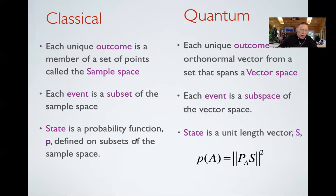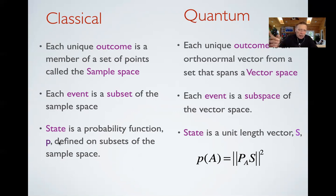In classical probability theory, when we want to assign a probability to an event — say, the probability that somebody gives a rating greater than four — we construct a probability function P that assigns a probability to all these events. This probability function is a number greater than or equal to zero and less than or equal to one. When we have two mutually exclusive events A and B, the probability of A or B is the probability of A plus the probability of B.